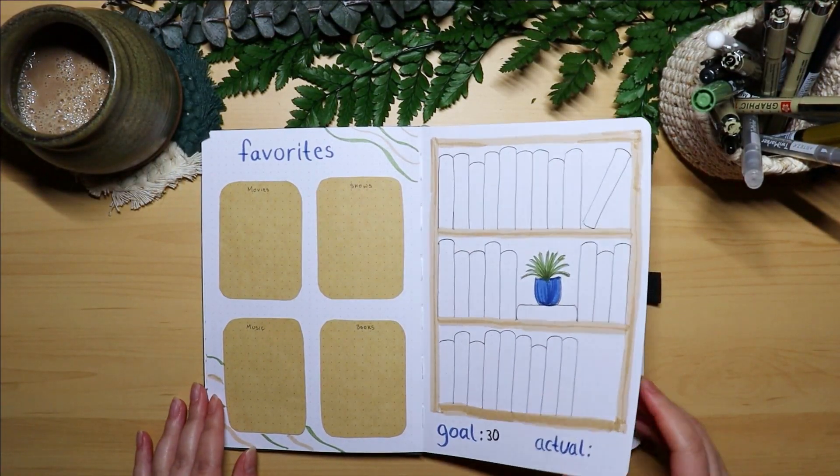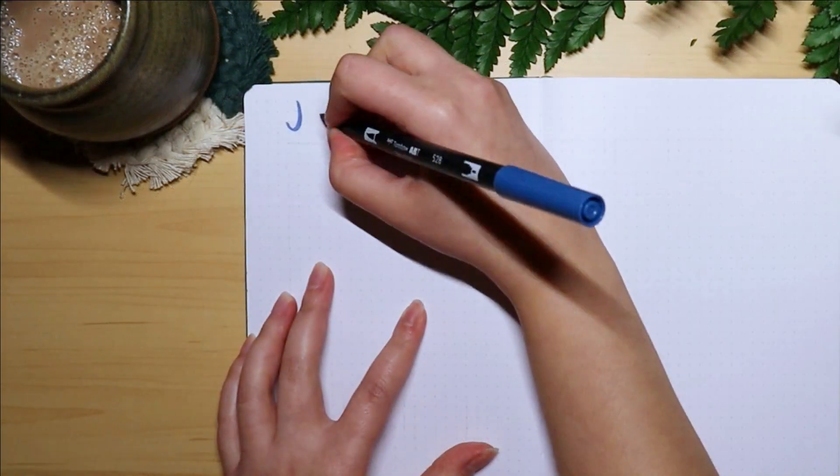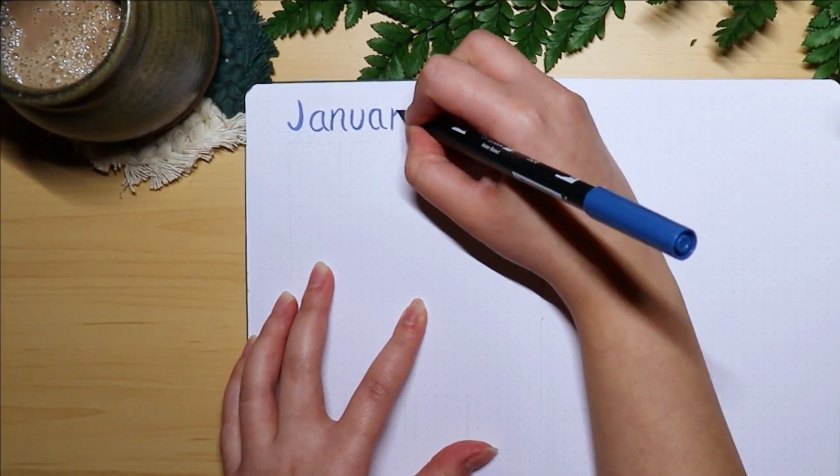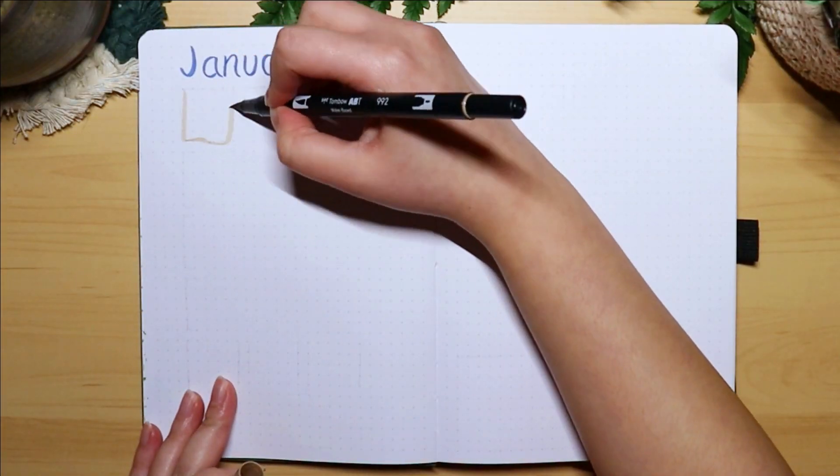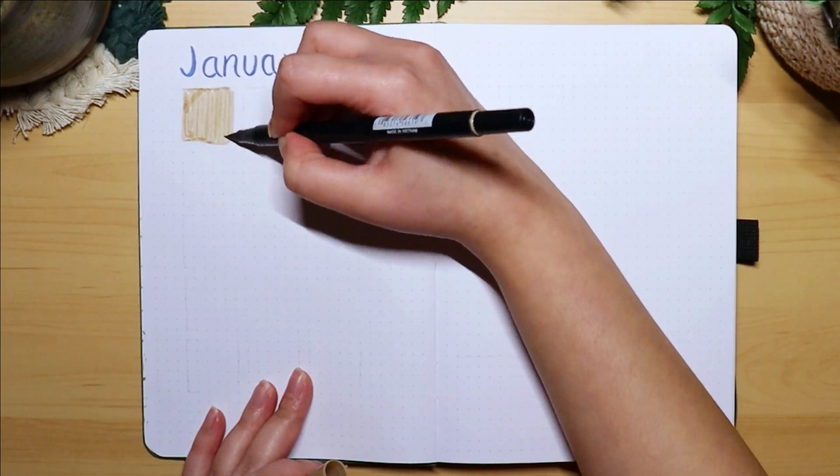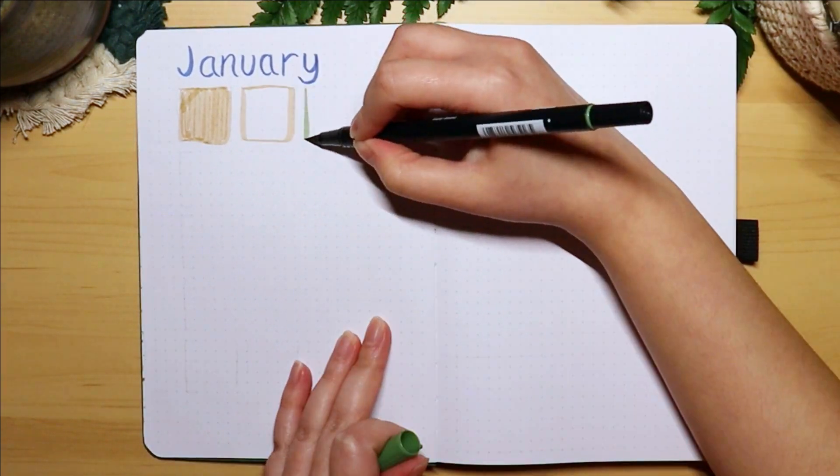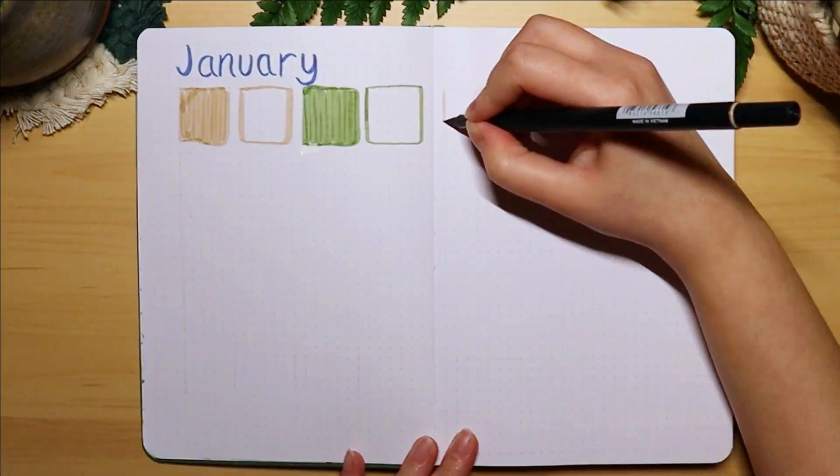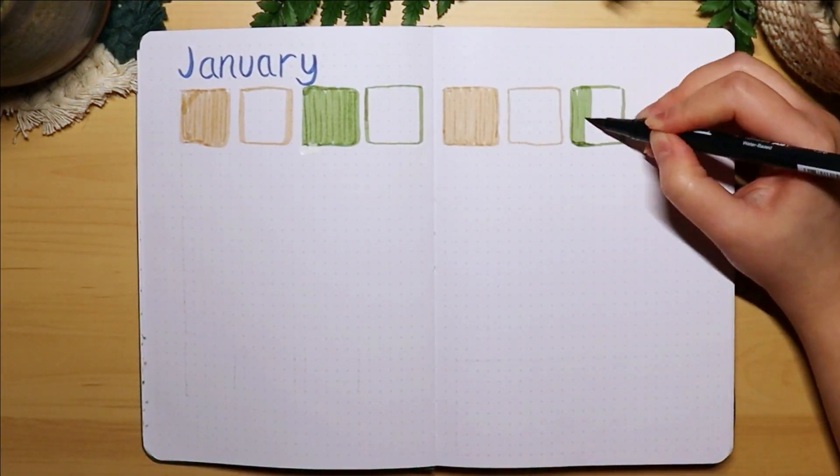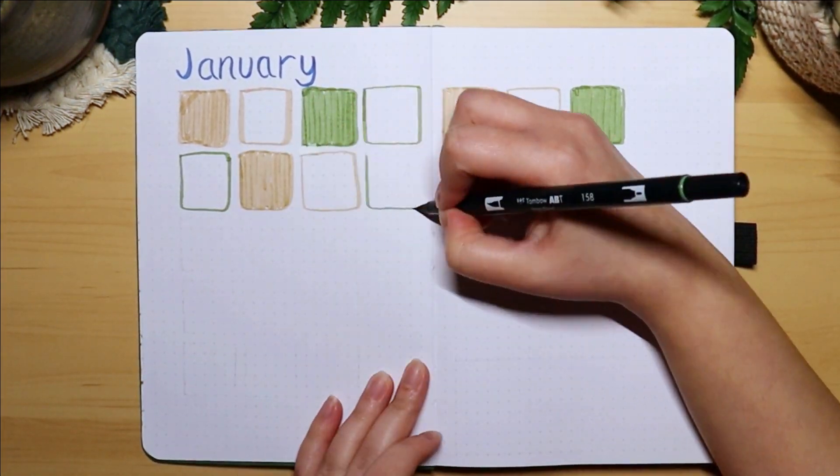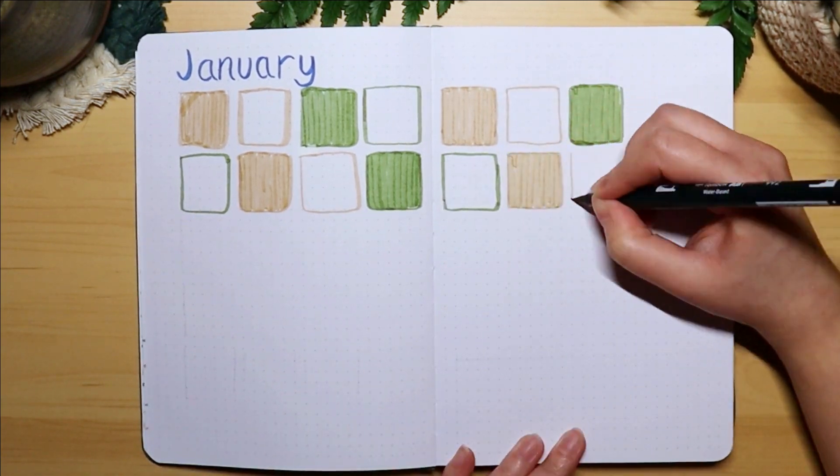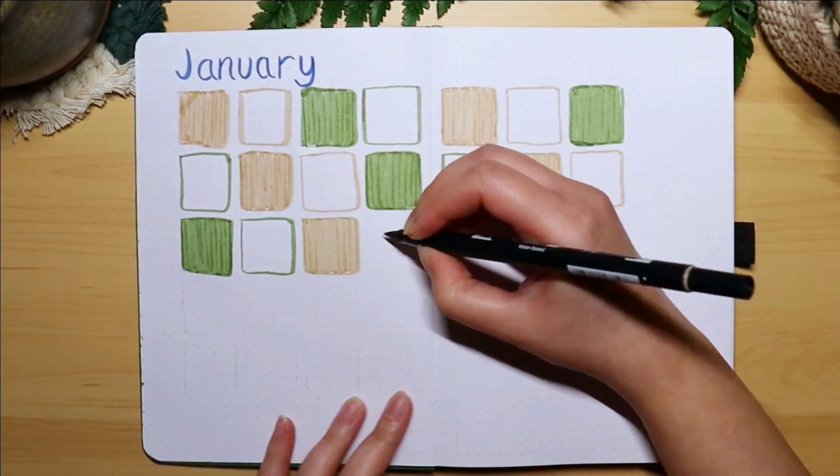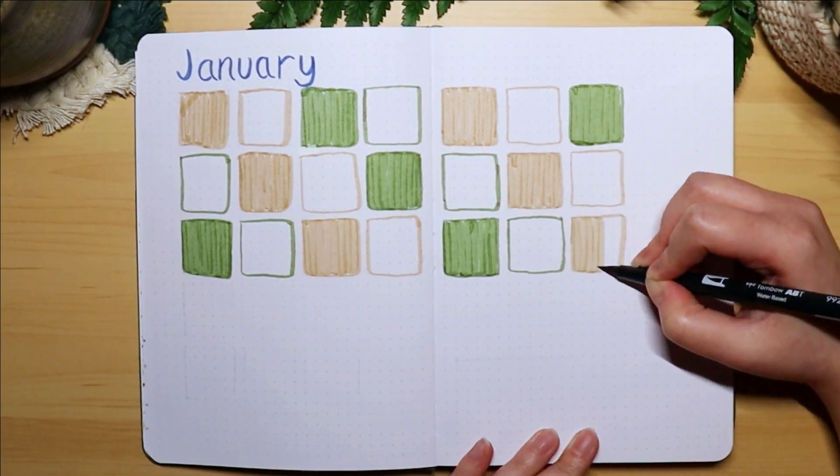That's it for my yearly setup. Now for my January spread. I'm including my January spread in this video just to save on time, and I'm going to be keeping it very simple with just a monthly page, habit, and mood trackers. For my monthly spread, I'm using a two-page setup just so I have enough room to write things down because I won't be making any weeklies for this month.